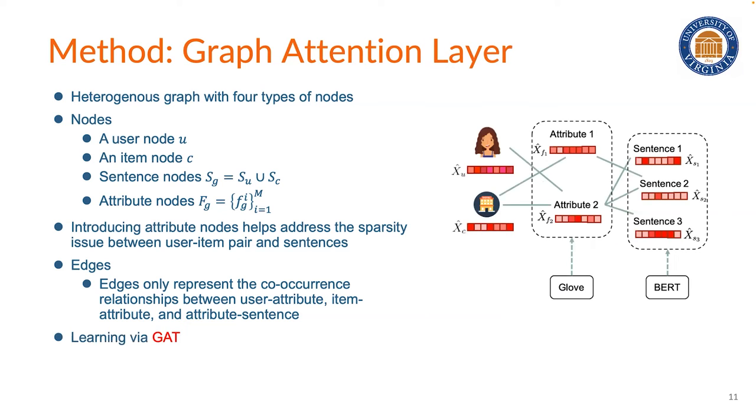We use a graph attention network to learn the dependence between these four different types of nodes, and to also capture the semantic of attributes and sentences. We use pre-trained GLOVE and BERT to initialize the attribute and sentence node embeddings.